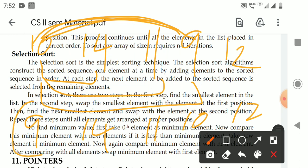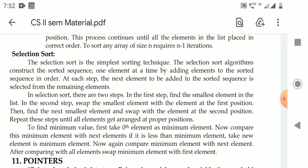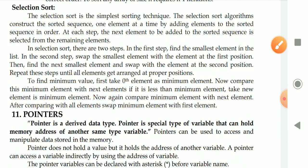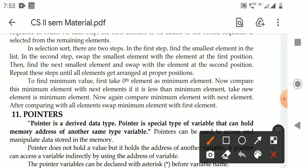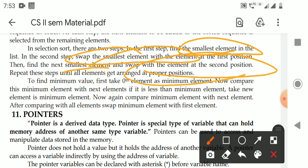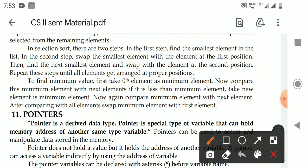Now we take the second element, 14, and find which element is less than 14. If 11 is less than 14, yes, 10 will be placed accordingly. In selection sort, there are two steps: first, find the smallest element in the list; second, swap the smallest element with the element at the first position. Then find the next smallest element and swap it with the element at the second position. Repeat this process.